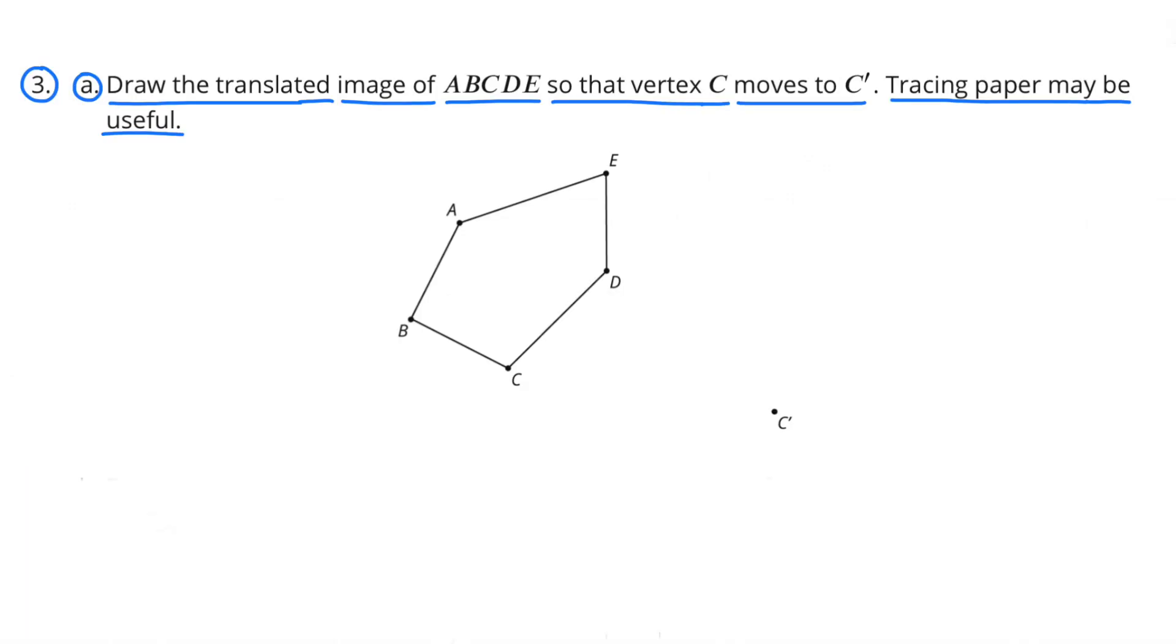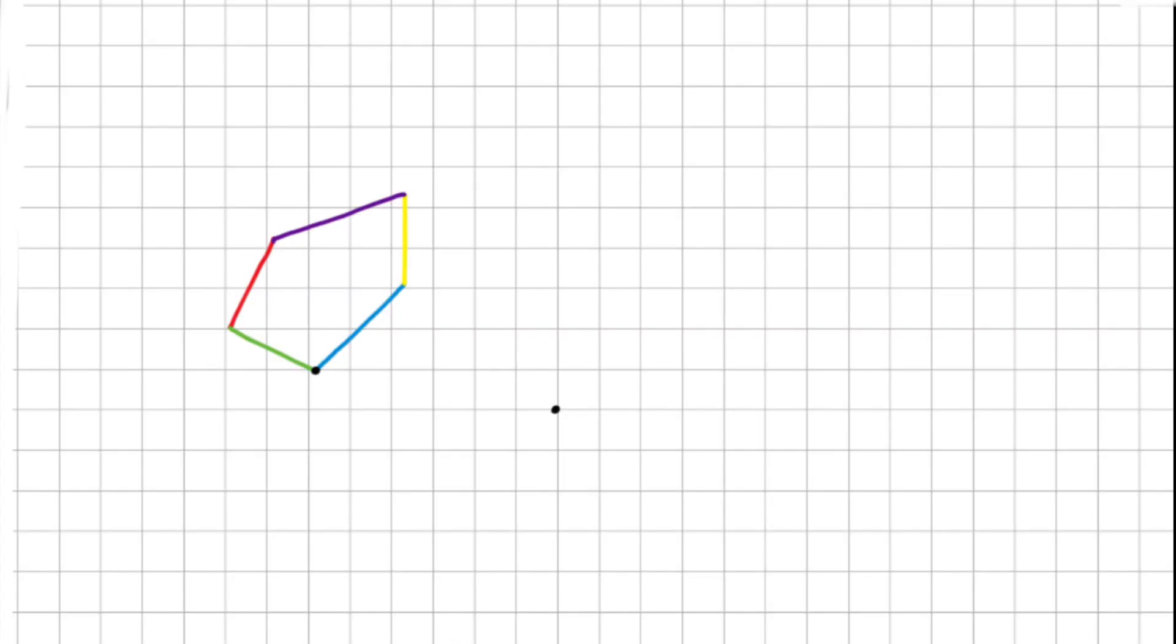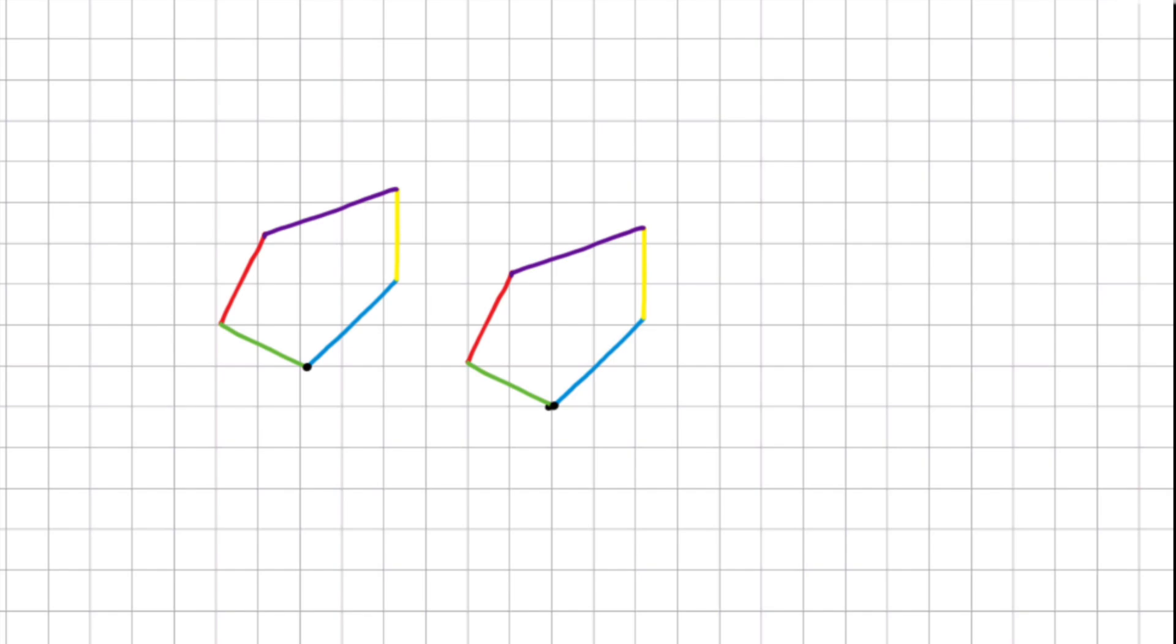Number 3A. Draw the translated image of ABCDE so that vertex C comes to vertex C prime. You'd be better off using tracing paper, but I'm putting my example on graph paper. Here's the translated image of ABCDE with the vertex C moving to C prime.